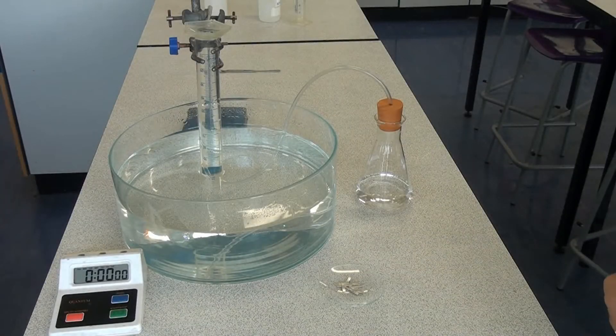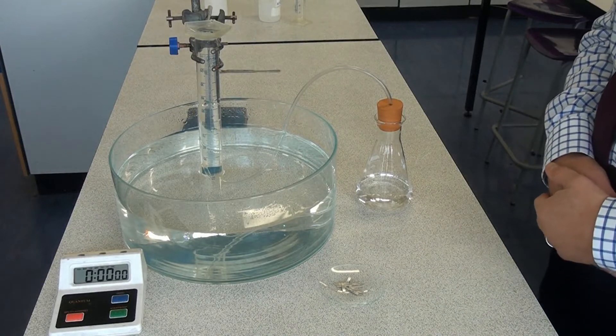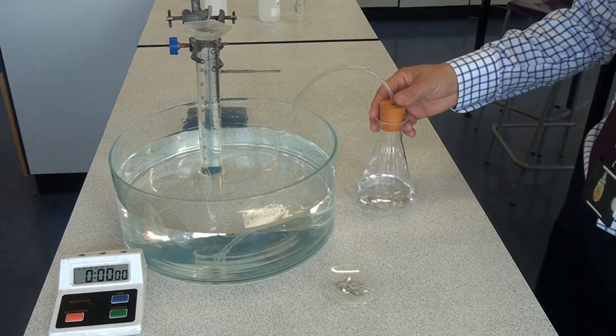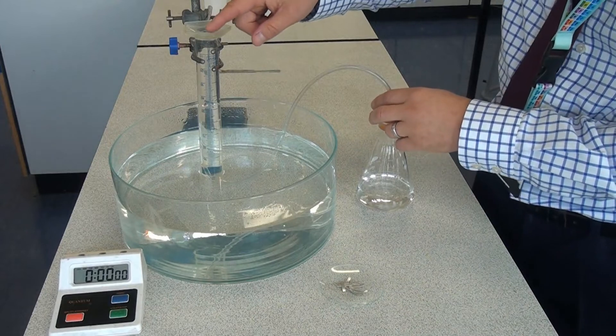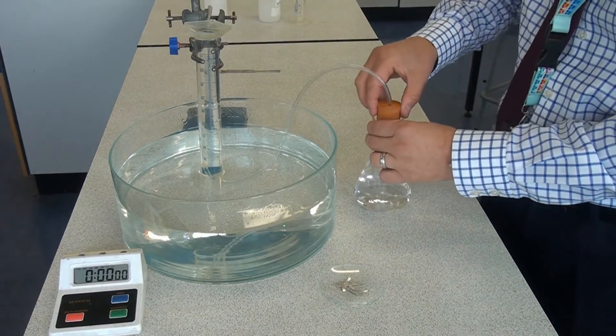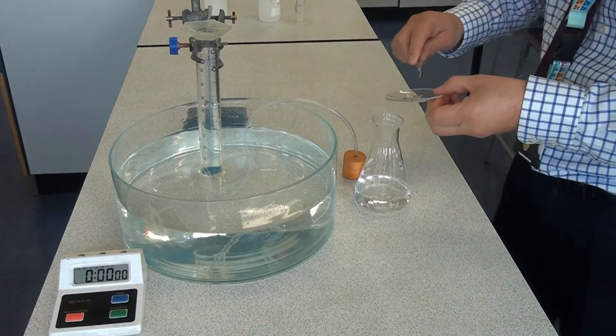So here is the second way of measuring the rate of reaction when we know the reaction is going to produce a gas. I've got a conical flask with the first reactant in and it's connected by a delivery tube to an upturned measuring cylinder that's got water in. So let's see what happens when I add the magnesium to the acid and the gas starts to be generated.